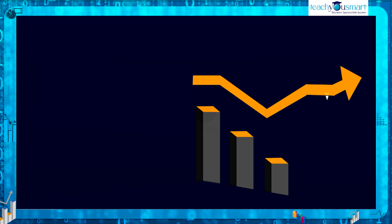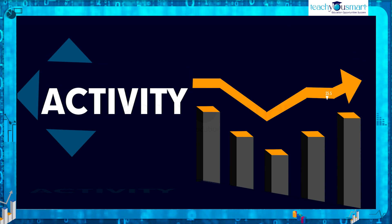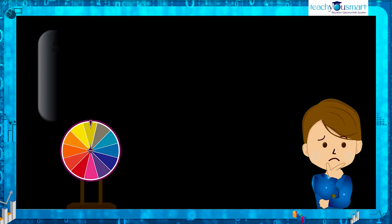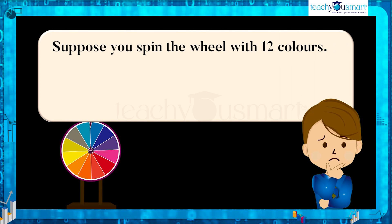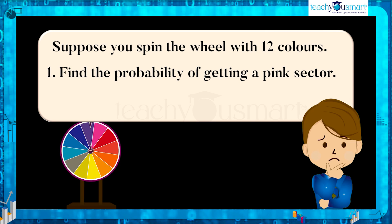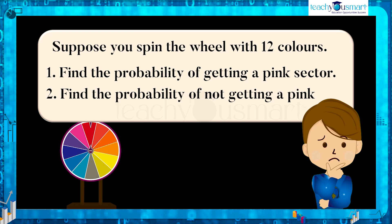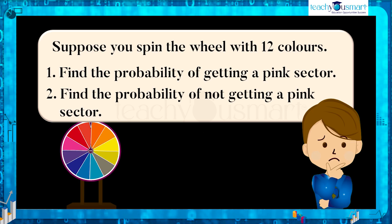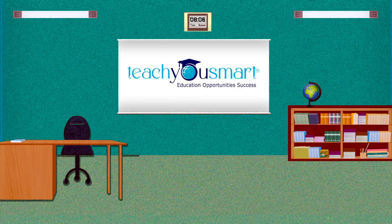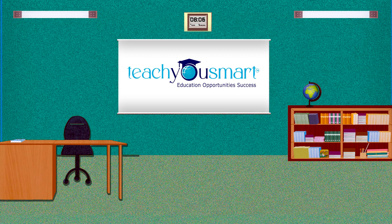Before winding up, let's check how much you understood by doing an activity. Suppose you spin the wheel with 12 colors. One: find the probability of getting a pink sector. And two: find the probability of not getting a pink sector. That's all for now. See you all in the next class with another interesting topic.